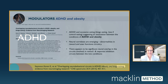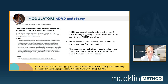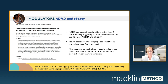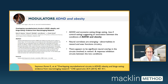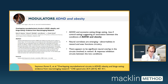What about ADHD? A key 2015 paper by Seymour describes that ADHD and excessive eating — binge eating or loss of control of eating — has always had a suggested association with obesity. Neural correlates are emerging: abnormalities in reward and executive function, wanting and restraint skills. There appears to be significant neural overlap in the circuits involved in reward and response inhibition between ADHD and obesity, with wanting becoming stronger and executive function becoming less.